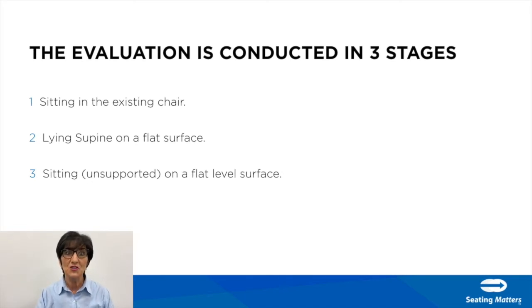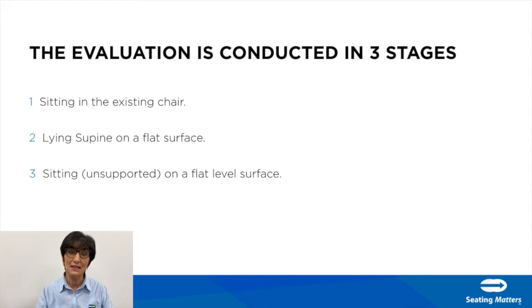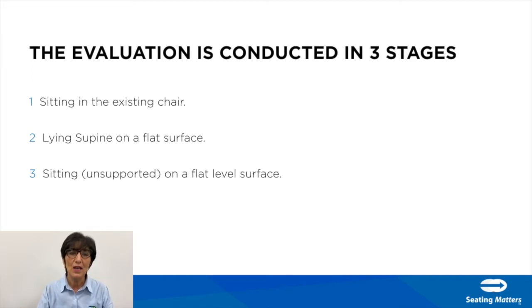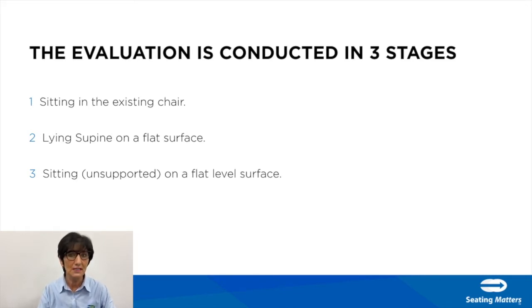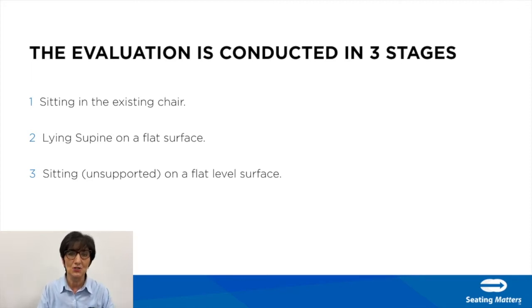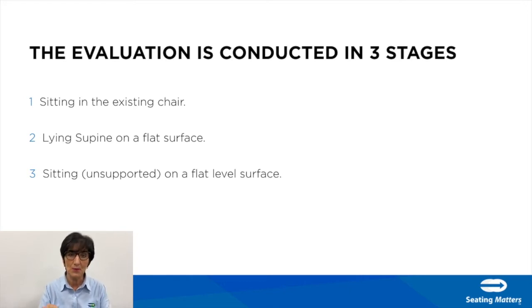Now that we've considered the general considerations, the actual seating assessment is usually conducted in three stages: the person sitting in their existing chair, in a supine position, and then in an upright seated position. I also want to highlight a question from an OT working in a care home who has no plinth — all her clients are on alternating air mattresses. You can do an assessment of the critical measures in a seated position, and I will address that in the practical demonstration.